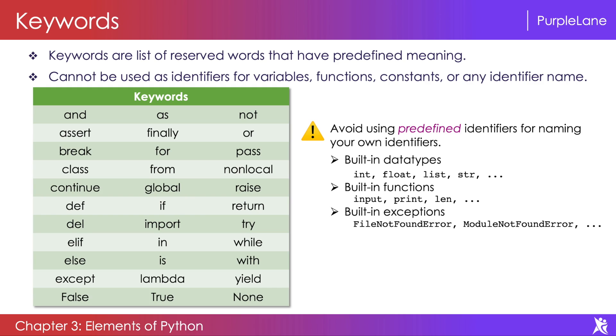Now you must be asking, how do I know whether an identifier falls into any of these categories? For that, Python provides us with a function which can display all the predefined identifiers.